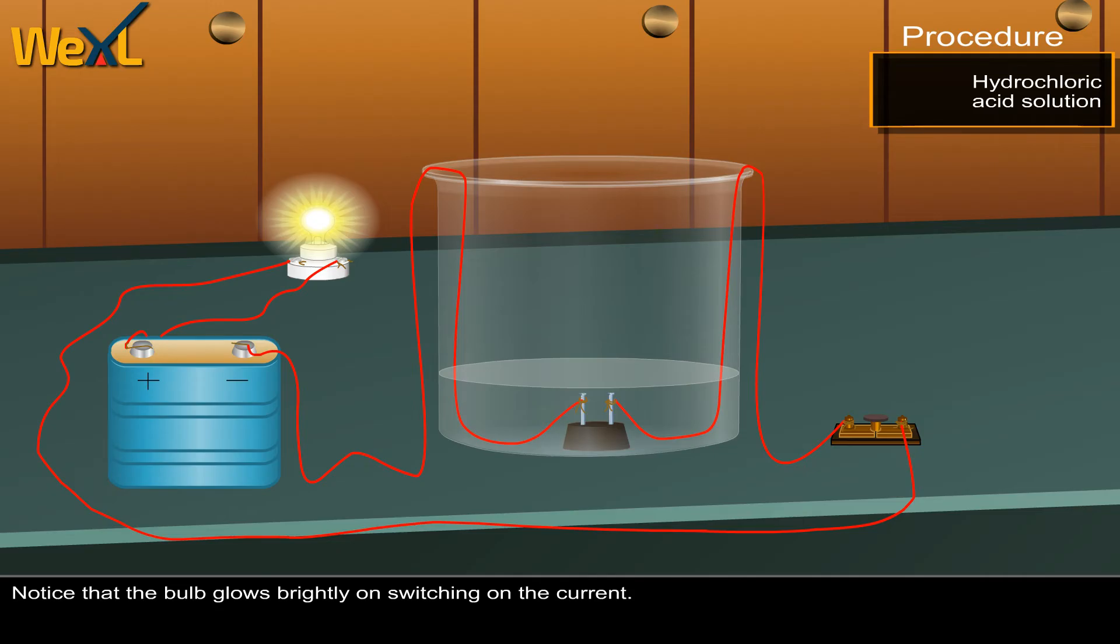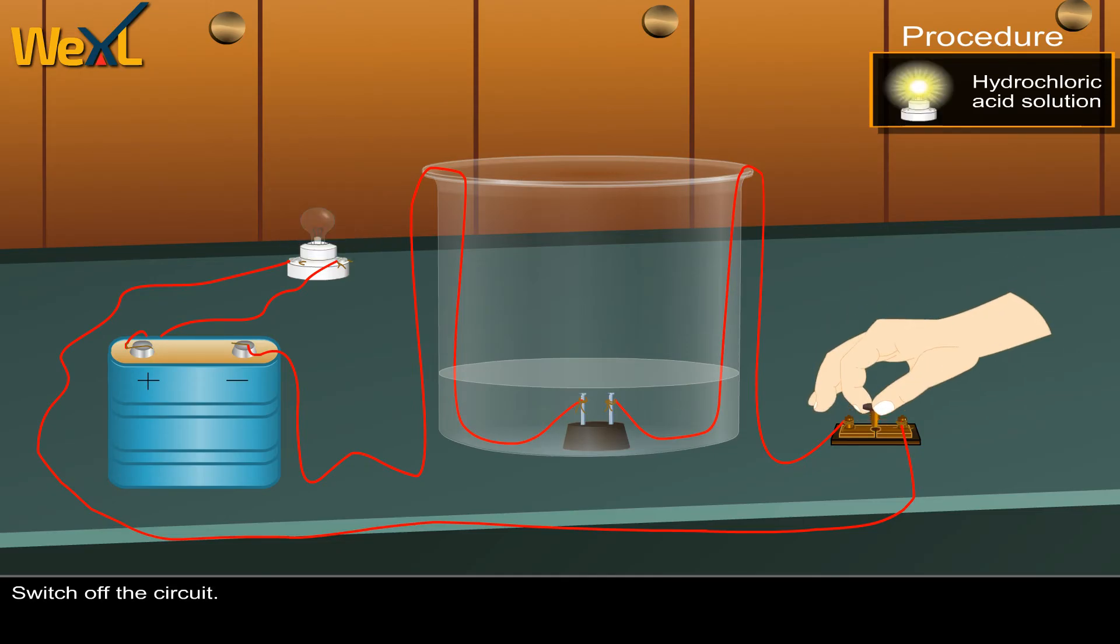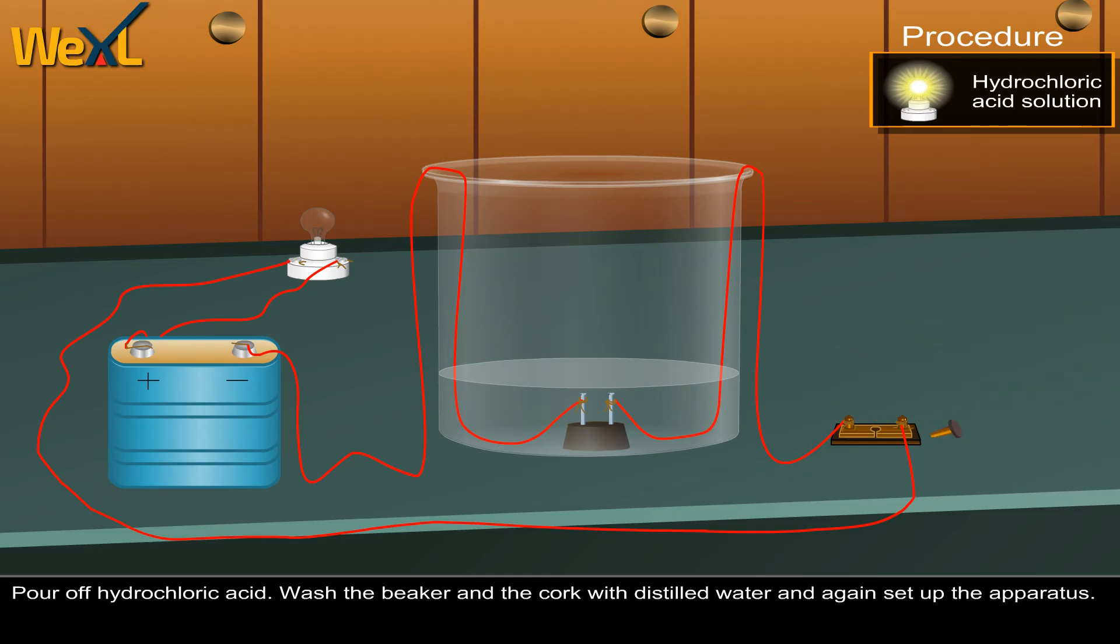Notice that the bulb glows brightly on switching on the current. Switch off the circuit and pour off the hydrochloric acid.